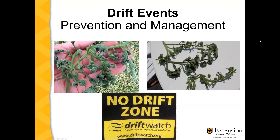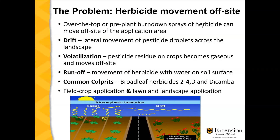Herbicide drift is a very frustrating situation to be involved with. I'm going to give a little bit of overview about drift and how you might be able to respond to it. The problem we have is herbicide movement off of the site of application. Oftentimes this herbicide is used as an over-the-top spray on genetically modified crops bred to be resistant to these herbicides, or a pre-plant burndown spray where folks are prepping in the spring and burning off any weeds present in the field before planting.